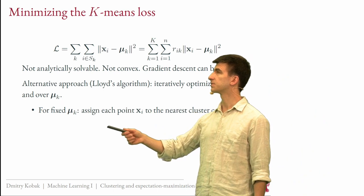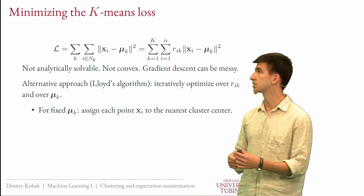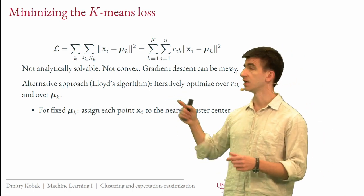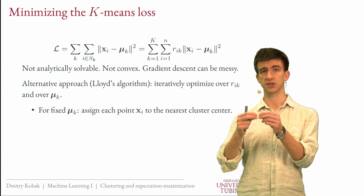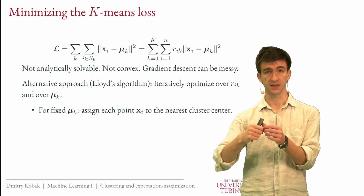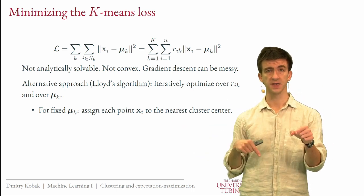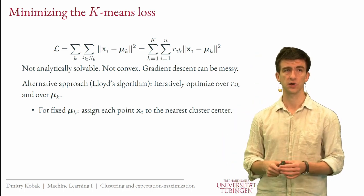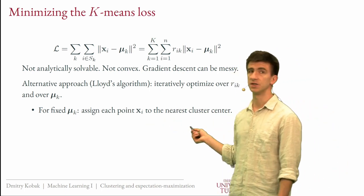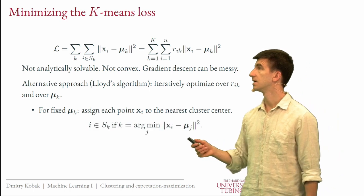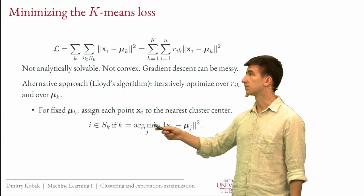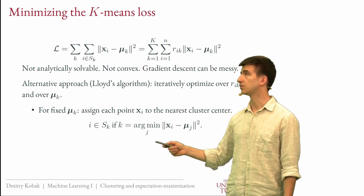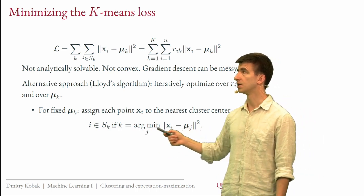The first step: we hold the mus fixed and want to find which cluster each point should go to. Each sample will contribute to the loss function the squared distance to the cluster representative vector. So if the representative vectors — the mus — are all fixed, where should a given sample go? It should go to the closest mu. This will minimize its contribution to the loss. So you just assign each point to the nearest cluster center. Mathematically, each sample i goes into cluster k where k is the value that minimizes the distance to mu — i.e., the closest mu to x_i.